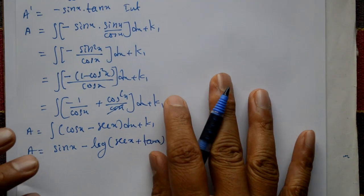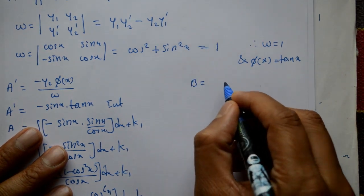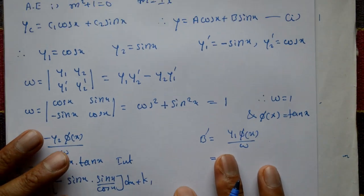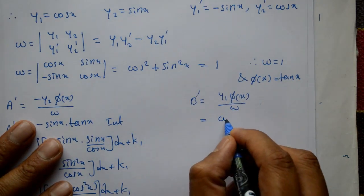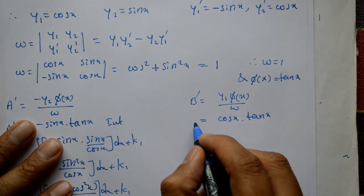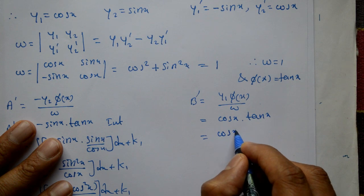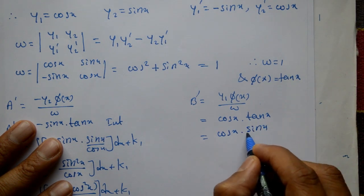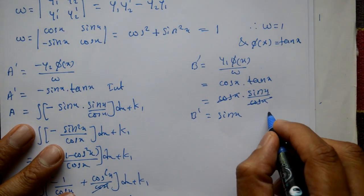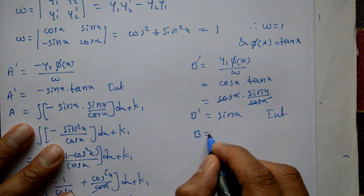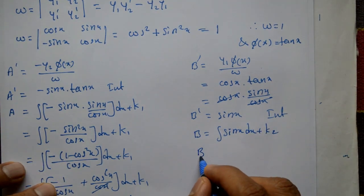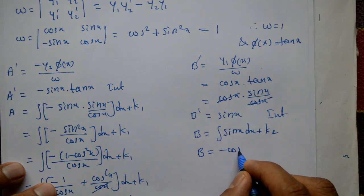Now b' = y1·φ(x)/W = cos x·tan x / 1 = cos x·(sin x/cos x) = sin x. Integrating both sides: b = ∫sin x dx + k2. Therefore b = -cos x + k2.